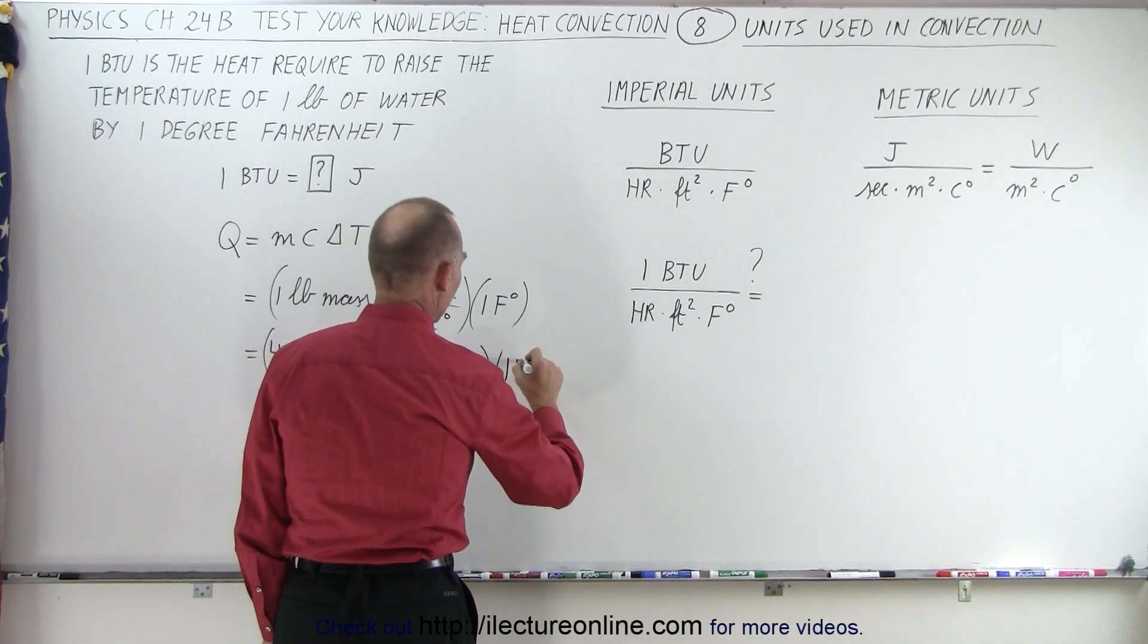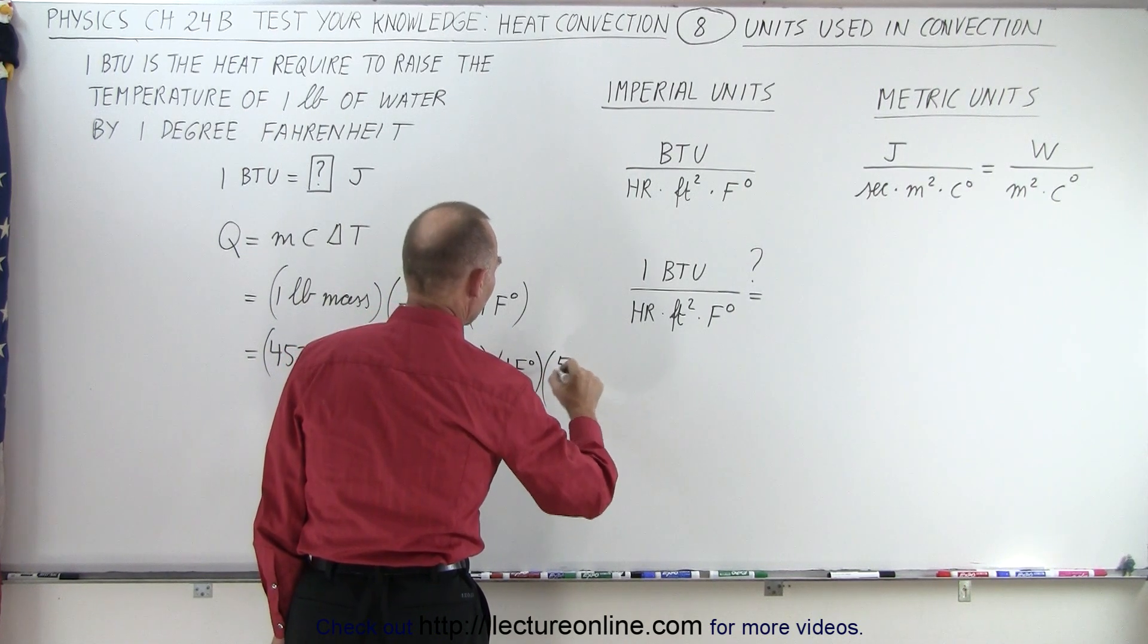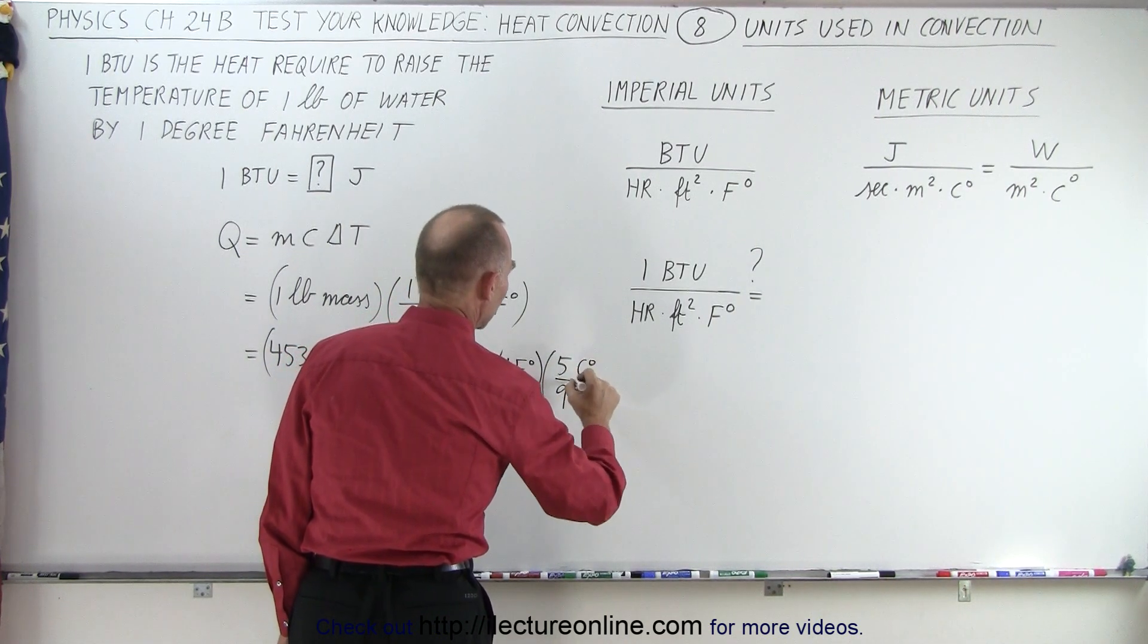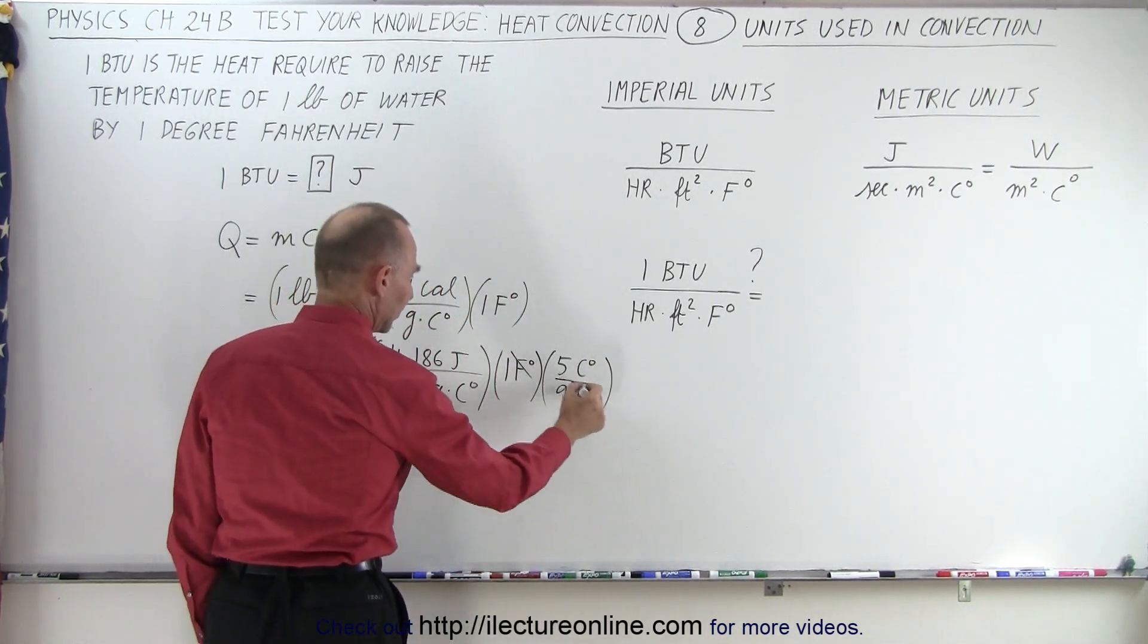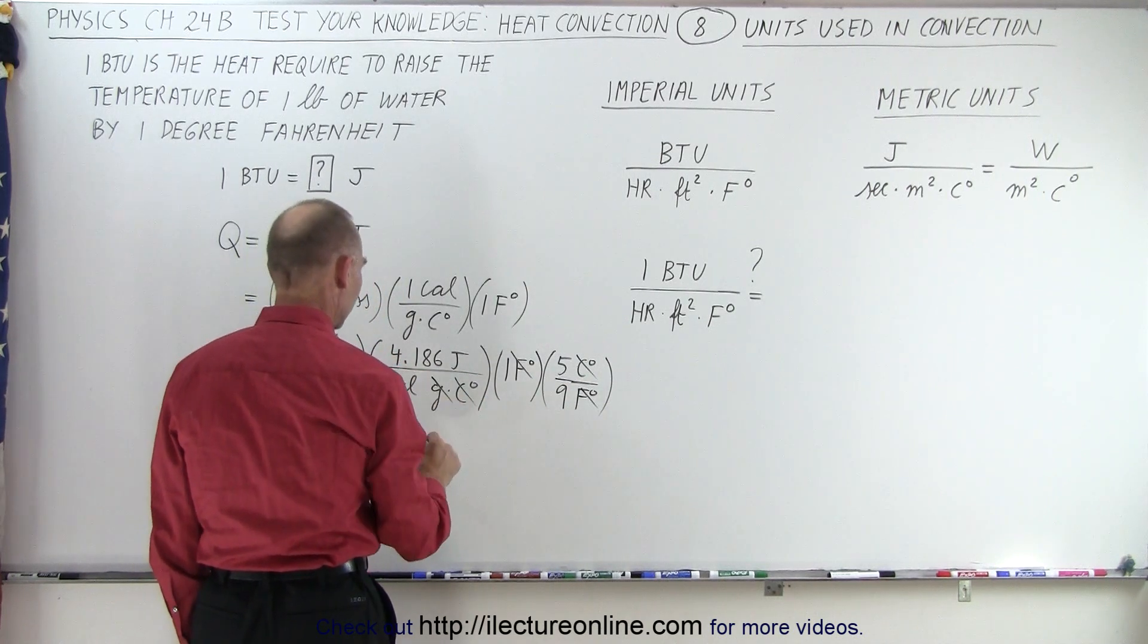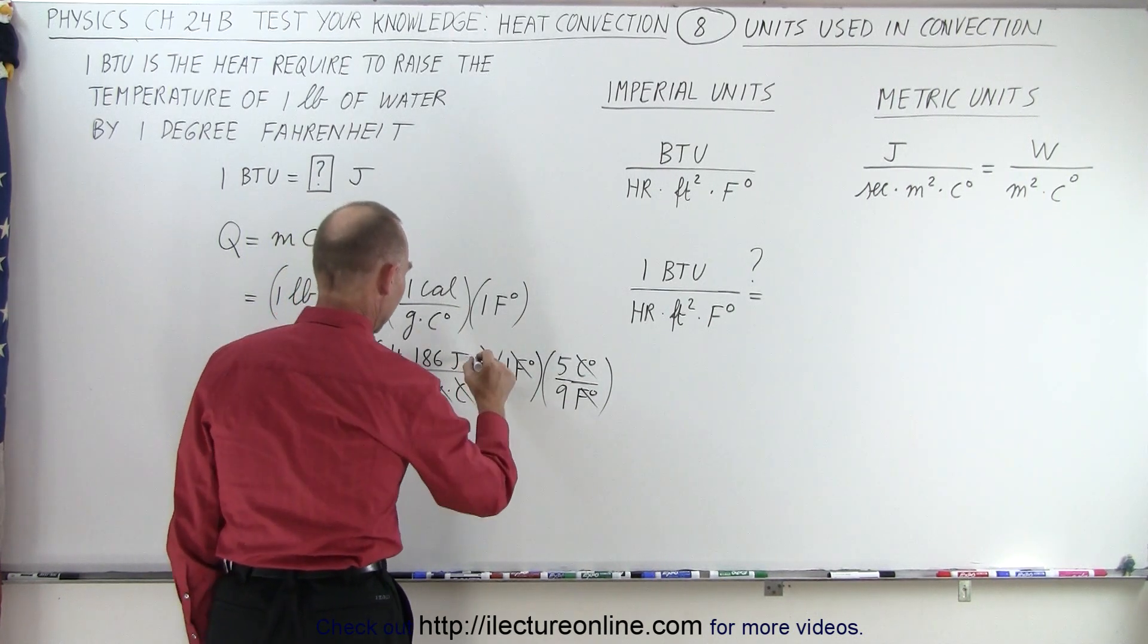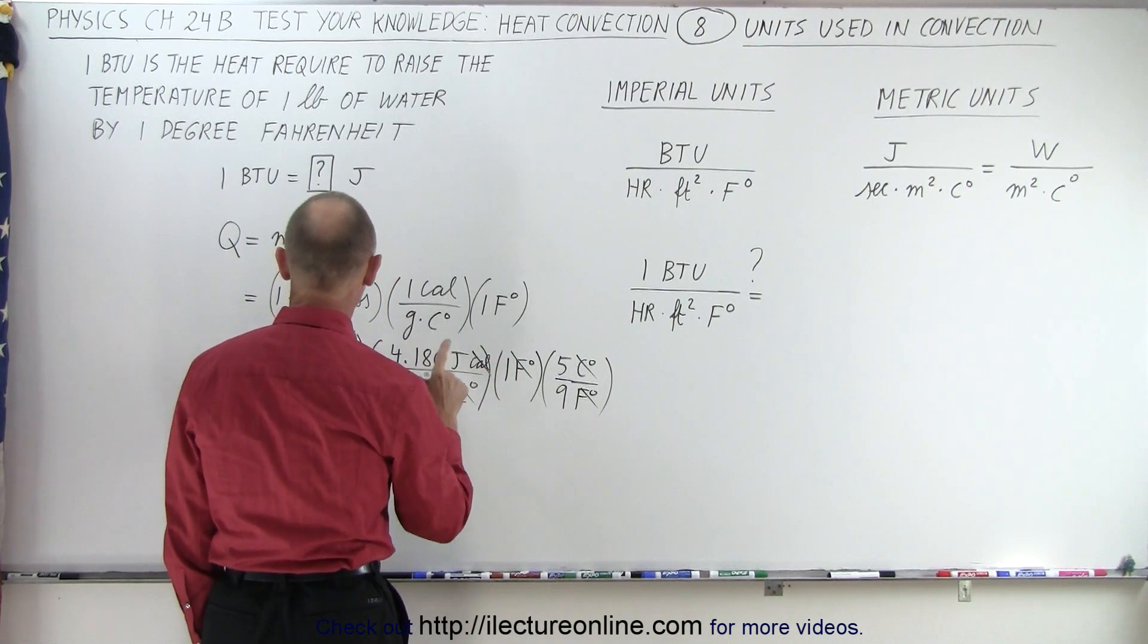So we have one Fahrenheit degree, but we're going to multiply that times 5 over 9 centigrade degrees per Fahrenheit degree. So now notice that the Fahrenheit degrees cancel out, the centigrade degrees cancel out, the grams cancel out, the calories cancel out, and we have joules.